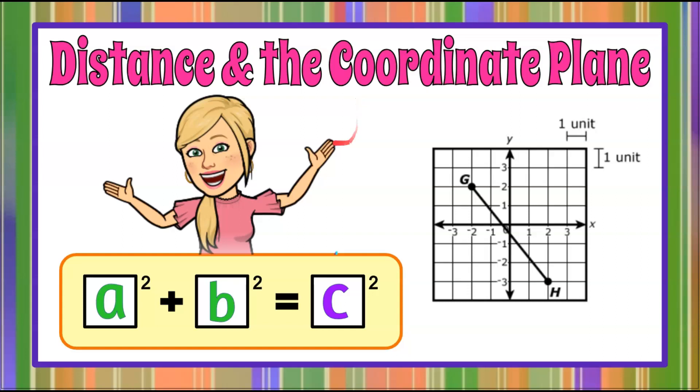It's the Magic of Math here and today we're talking distance and the coordinate plane. We're going to apply the Pythagorean Theorem to a coordinate plane forming a right triangle to find a diagonal distance.